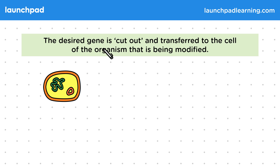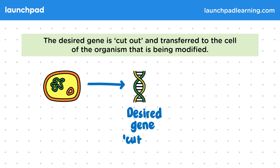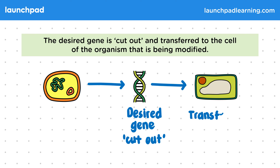The desired gene is cut out and transferred to the cell of the organism that's being modified. In this example, the desired gene is in a soil bacterium. So the desired gene is located on the genome, cut out, and then transferred to a maize cell.